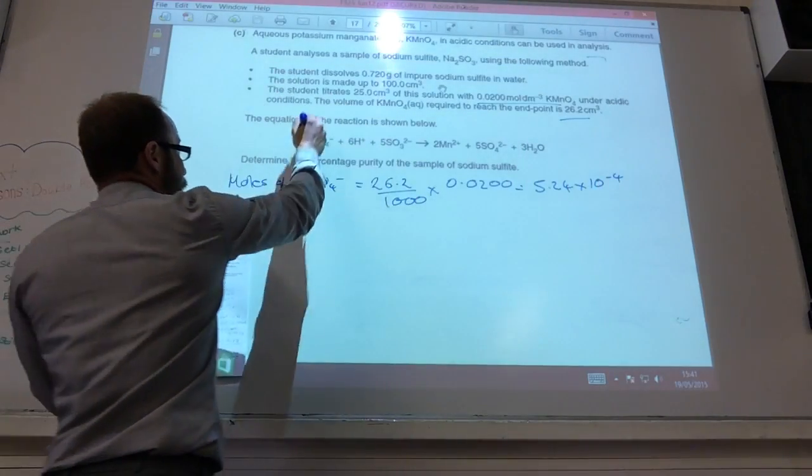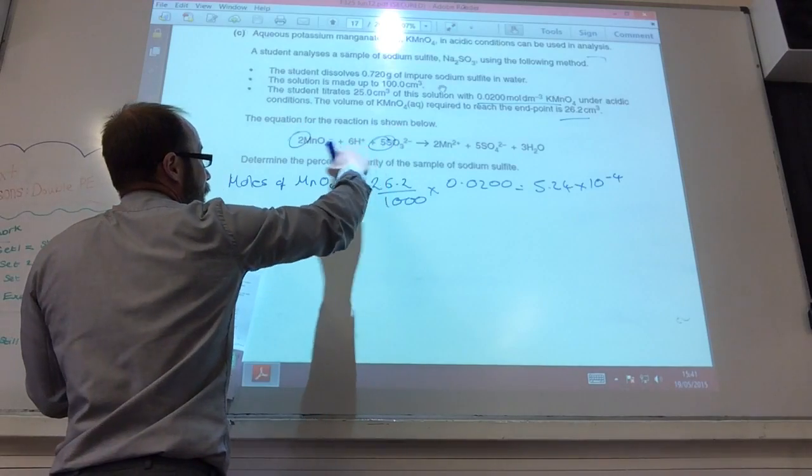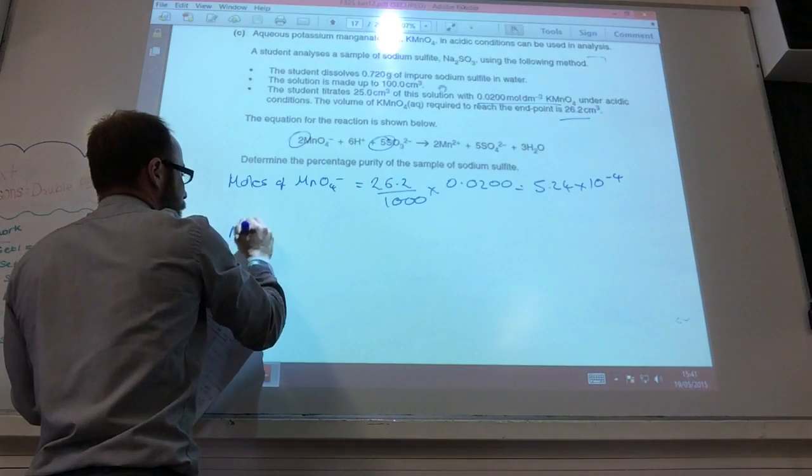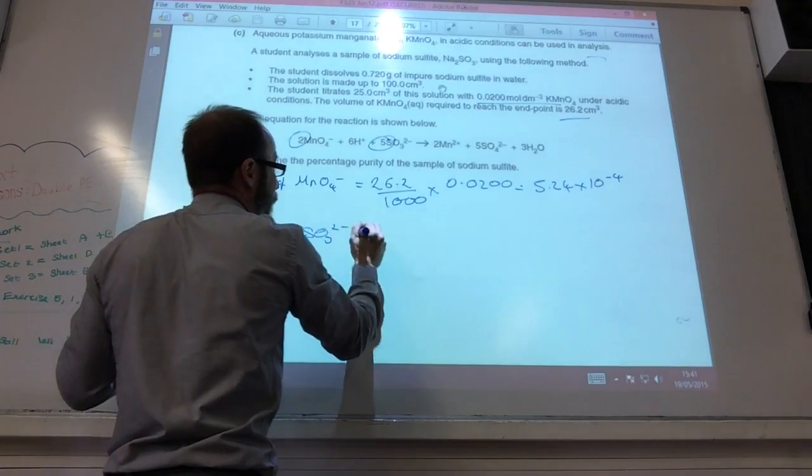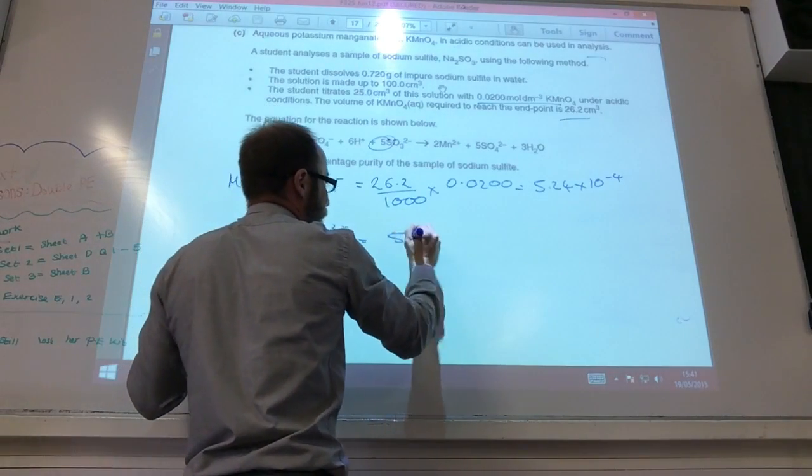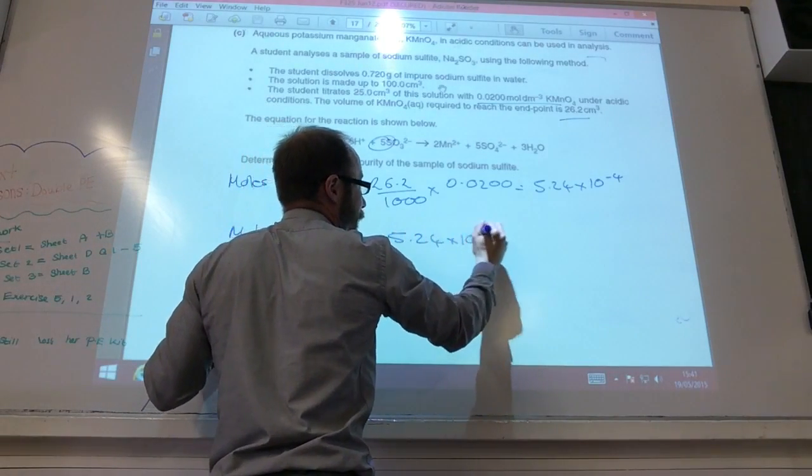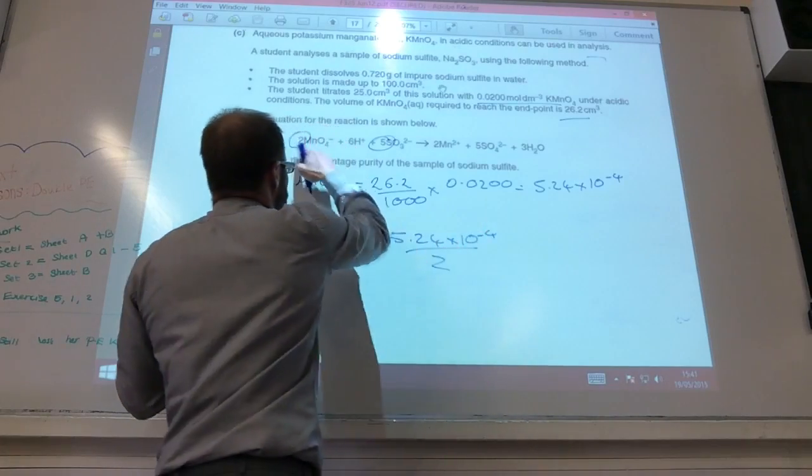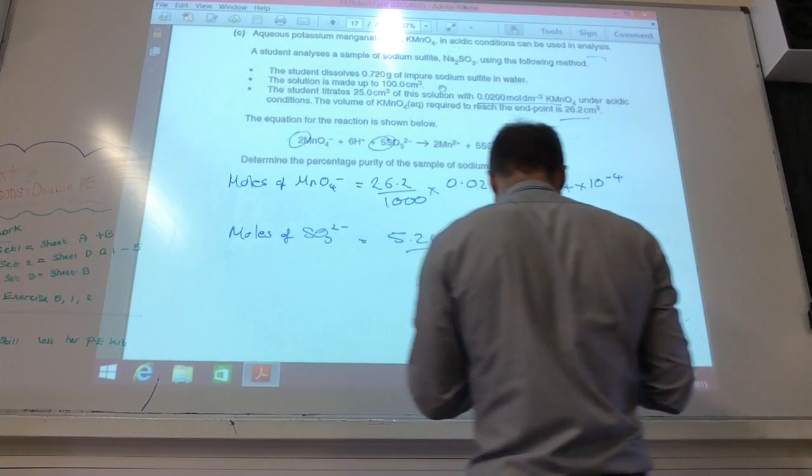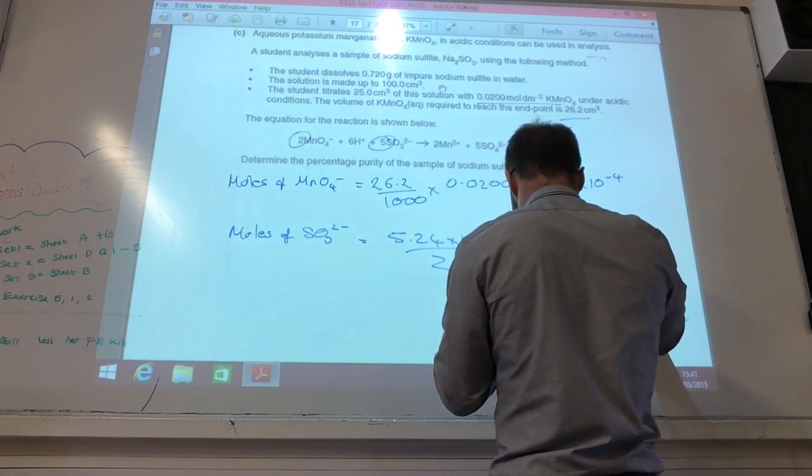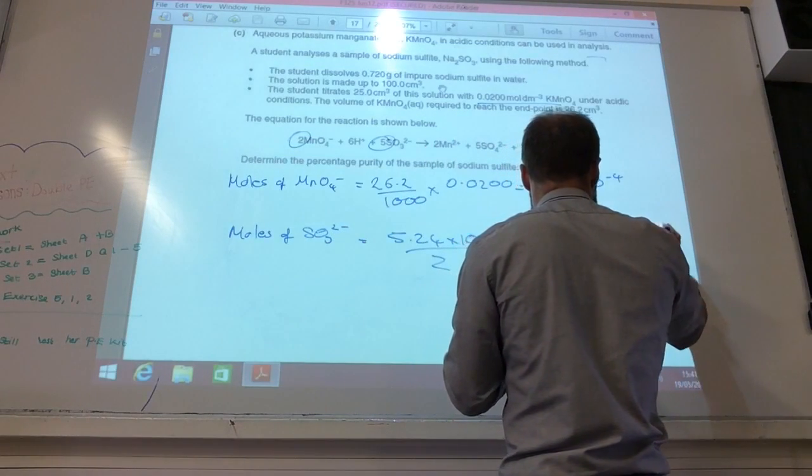Look at your reaction. For two of those, you get five of those. So moles of SO3 minus is going to be that number divided by 2 times by 5. And that's going to give you 1.31 times 10 to the minus 3.